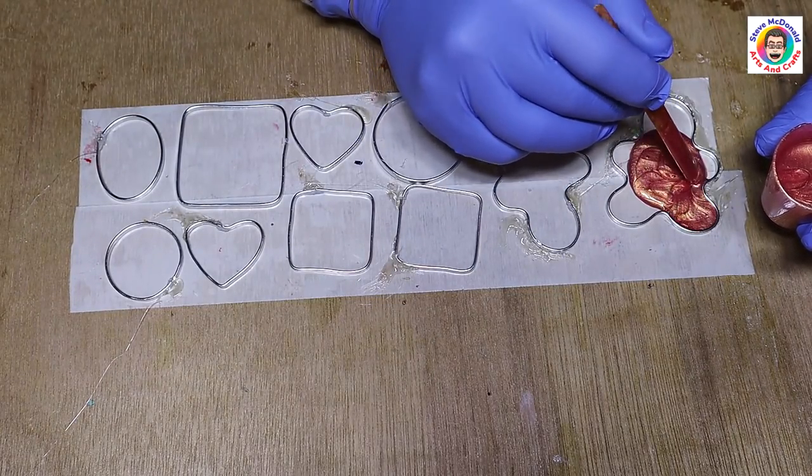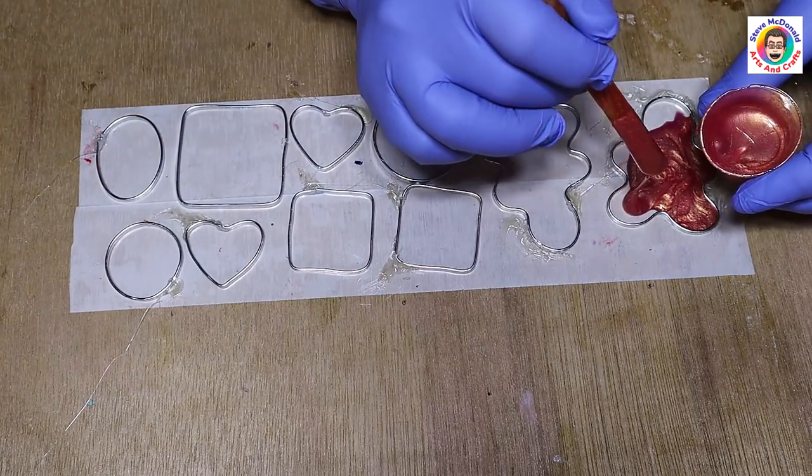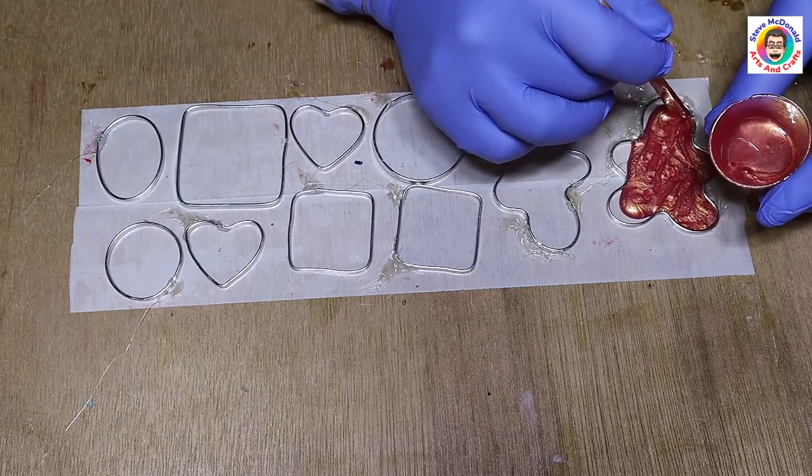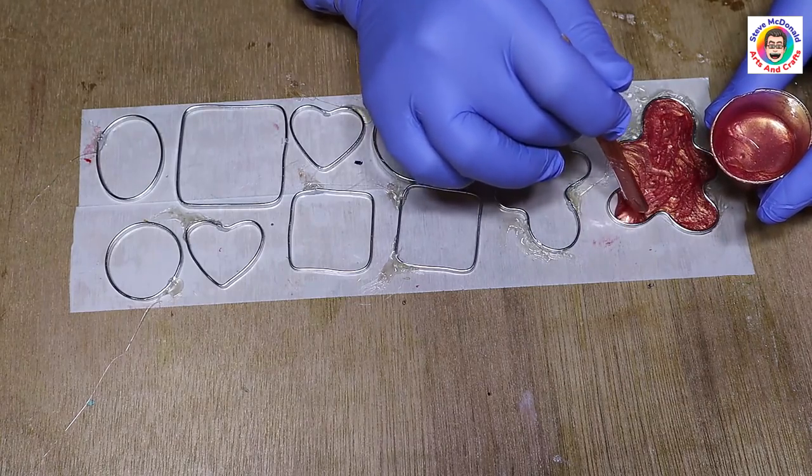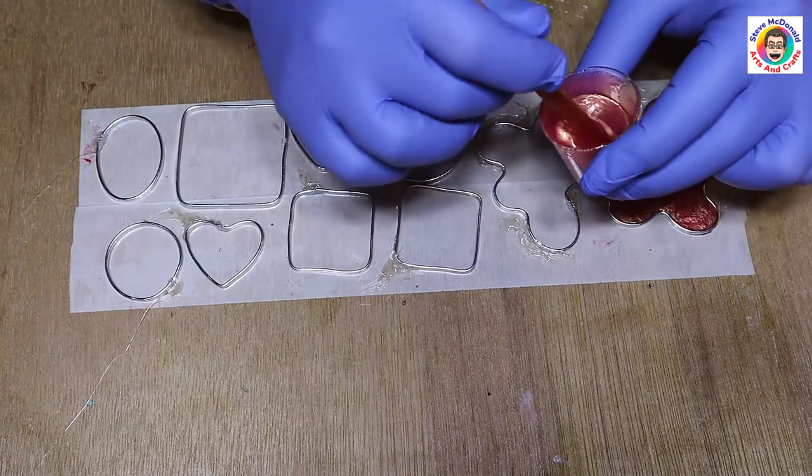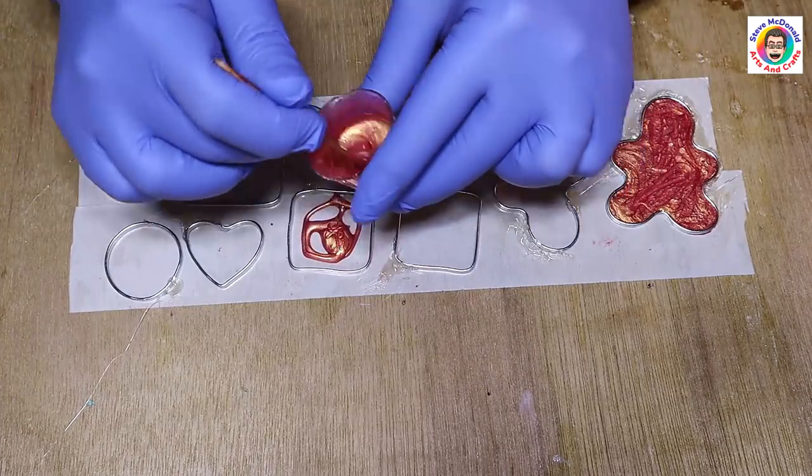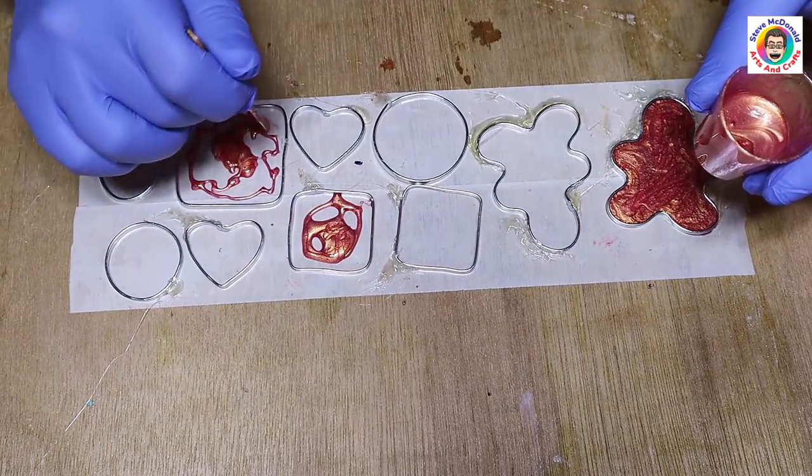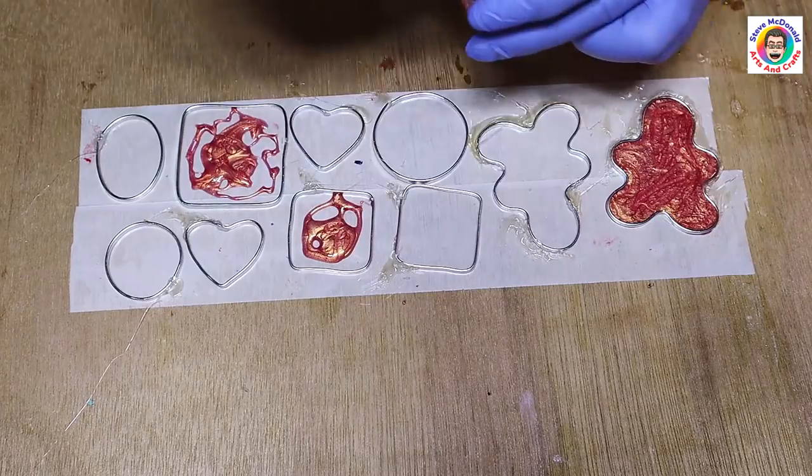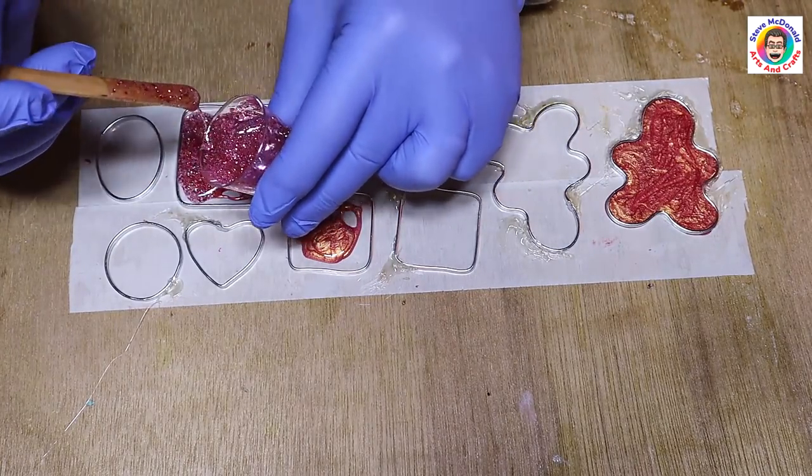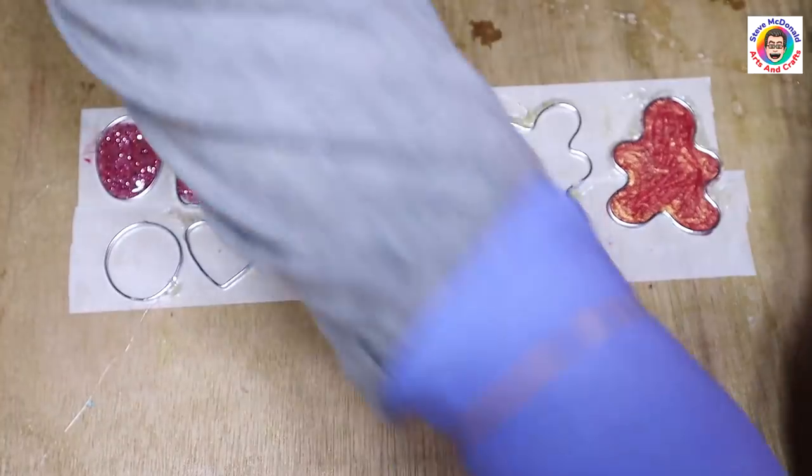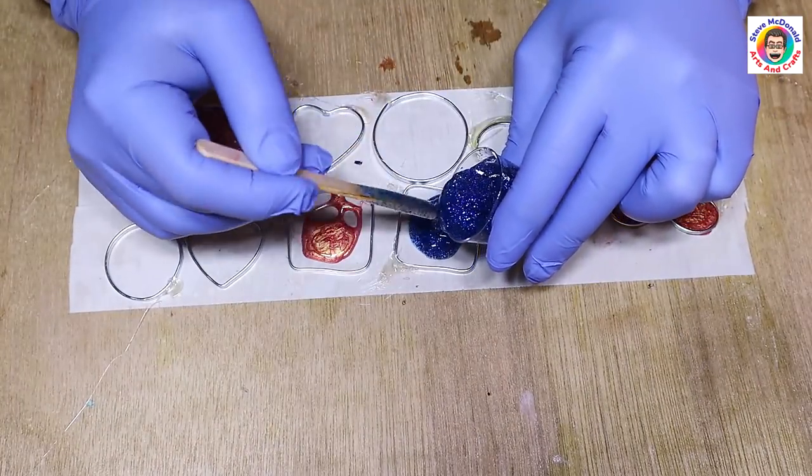I'm pouring my resin in here now. I've used mica powders and glitters separately to give different effects. When you're putting anything into your homemade bezels, ensure that the insides are clean. Also, make sure that you push the resin, if you've let it thicken up, right to the edges to make sure that you get a good seal and make sure that it stays where you want it to stay.